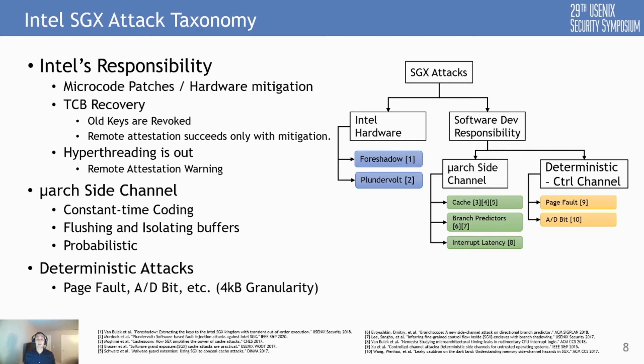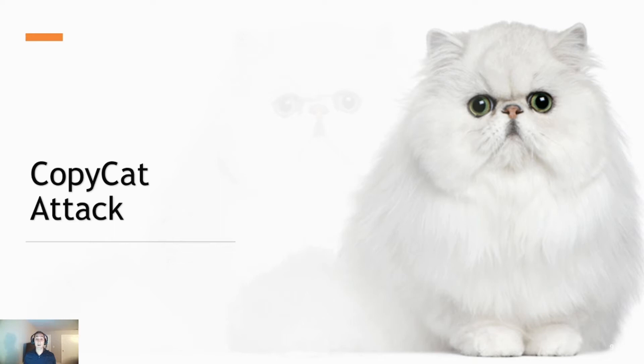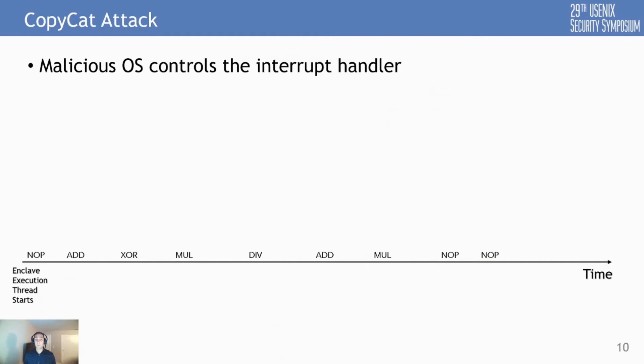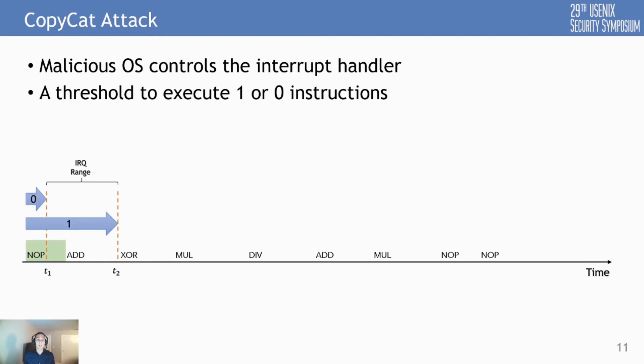In this talk, we introduce a new control channel attack called CopyCat that is deterministic but also has a very high spatial resolution. In the Intel SGX threat model, we can control interrupt handlers with high precision. This means that if you have an enclave thread executing instructions over a period of time, we can issue a very high precision timer interrupt to force a context switch on that thread. The state-of-the-art tool called SGX step can now interrupt an enclave at almost every desired instruction with some degree of noise.